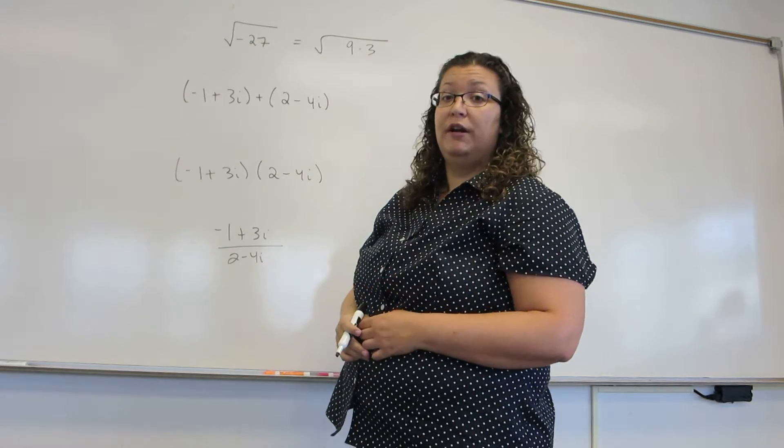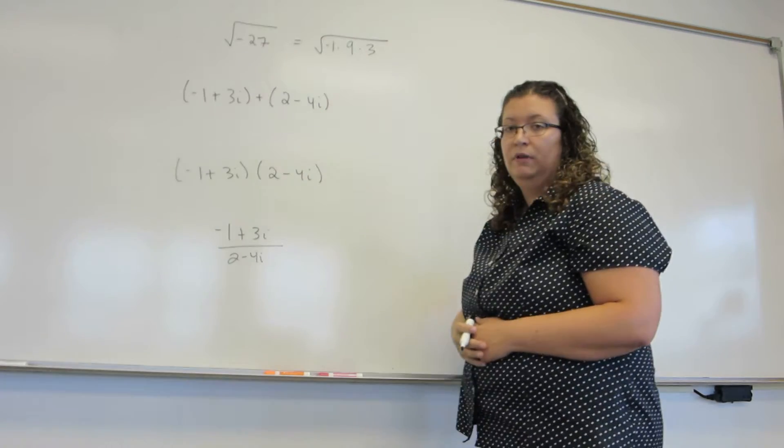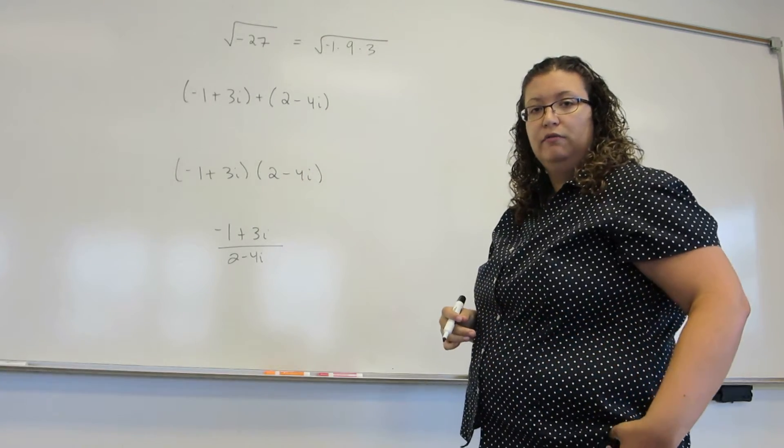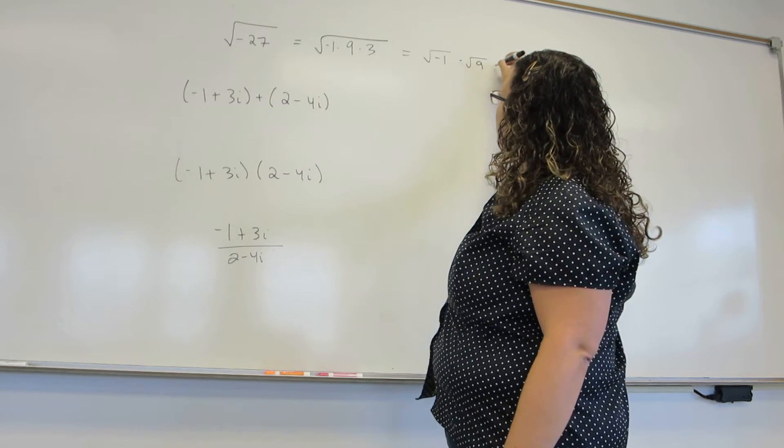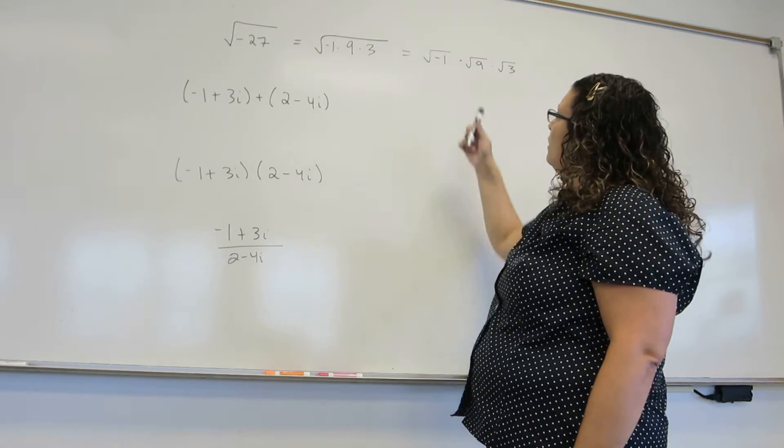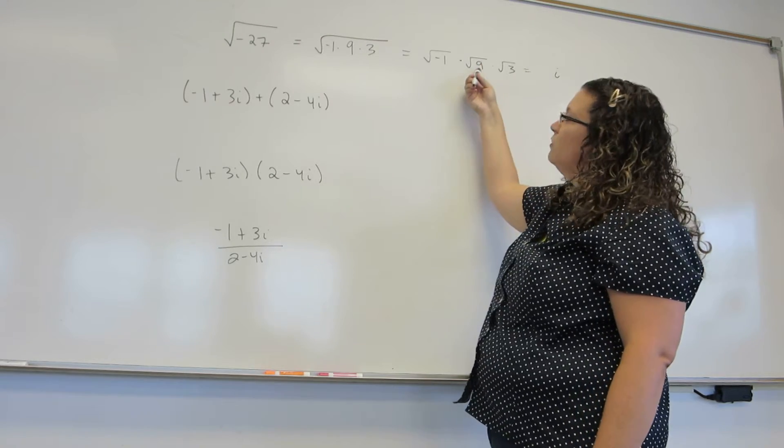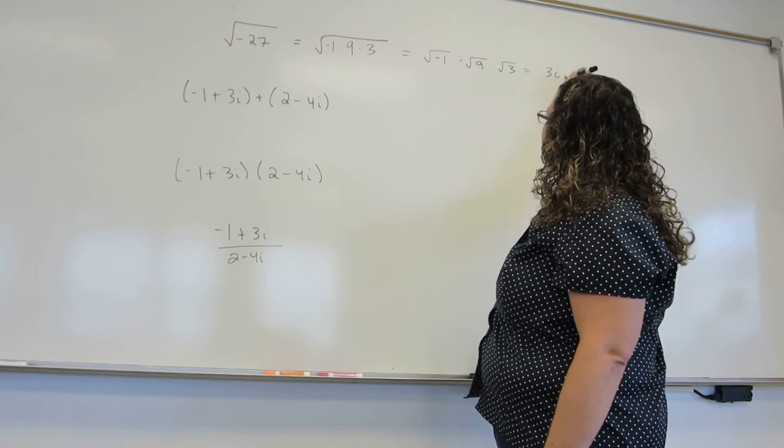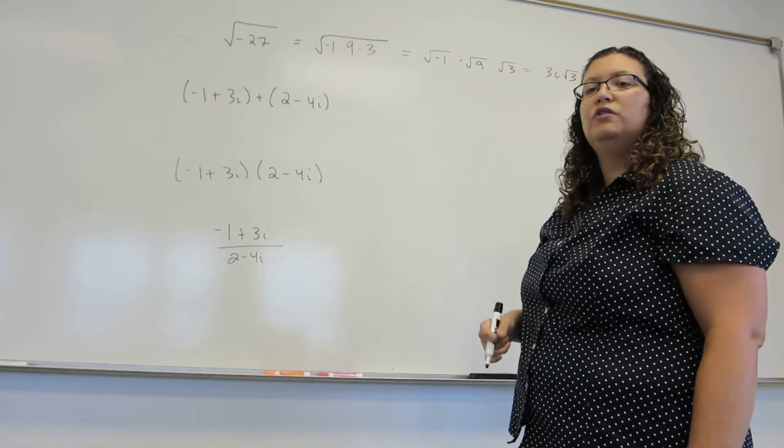But we also want to separate out the part that's going to be imaginary, so the negative 1. And now I'm going to take the square root of each piece individually. Square root of negative 1, square root of 9, and square root of 3. The square root of negative 1 becomes an i. The square root of 9 becomes a 3. And we're still left with that square root of 3 that we can't do anything about.